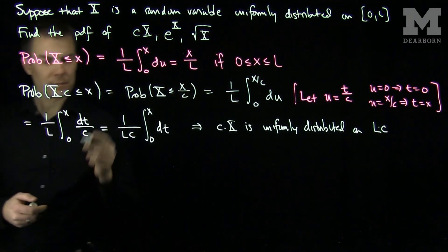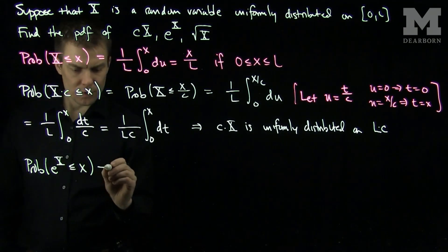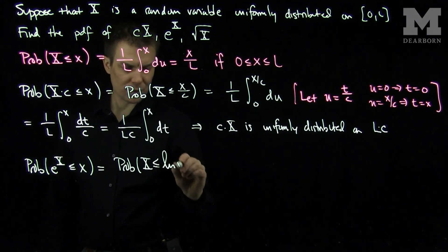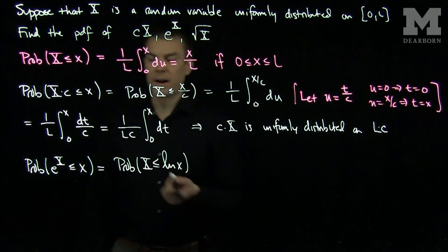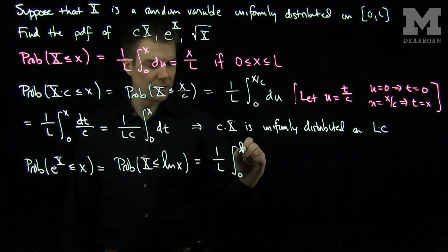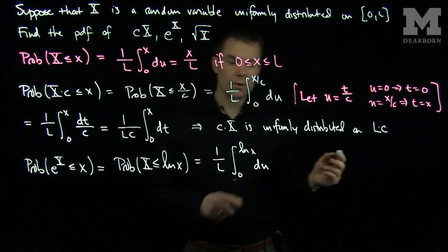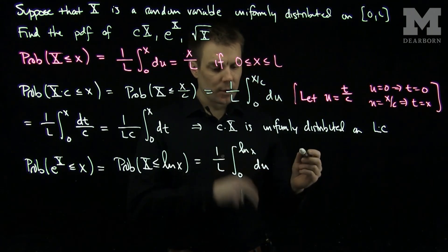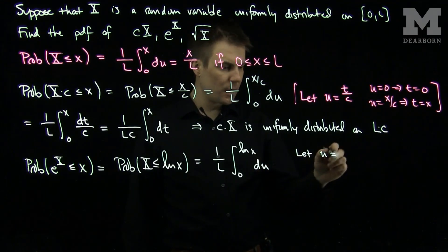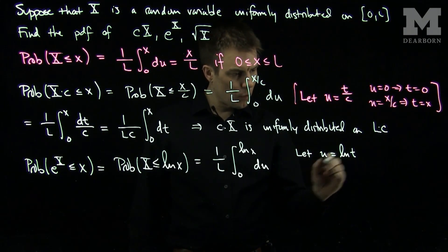So that's our first PDF. To find the second PDF, we find the probability that e to the X is less than or equal to x, which equals the probability that X is less than or equal to the natural log of x. We can find this probability using our integral: 1 over L times the integral from 0 to the natural log of x of du. Now we make a substitution, letting u equal the log of t, so that the limit changes to x.